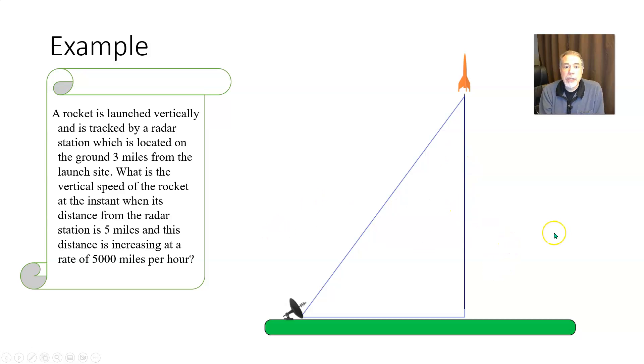Now we want to label everything that's changing here with a variable. Pick a letter to stand for that thing and think of that letter as a function of t. So one thing that's changing is how high up the rocket is, how far up it's gone, and I'm calling that a. Now I notice this looks like one side of a right triangle.